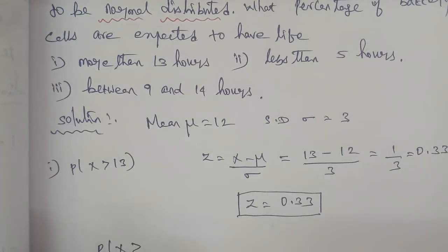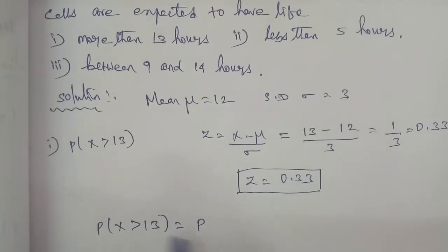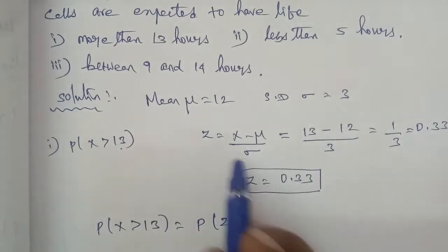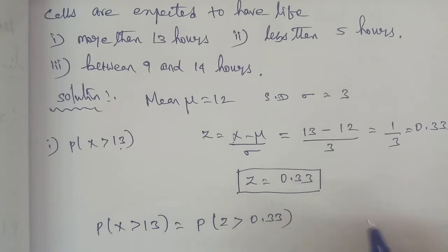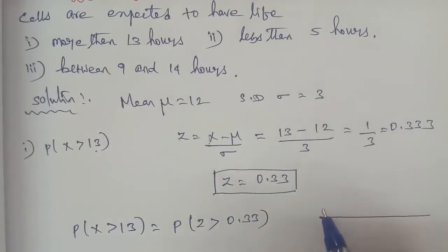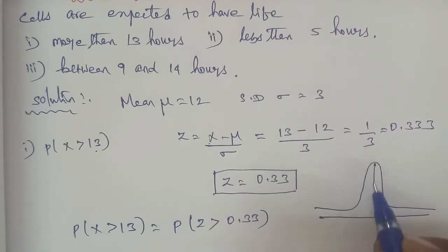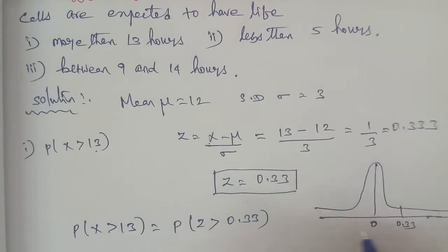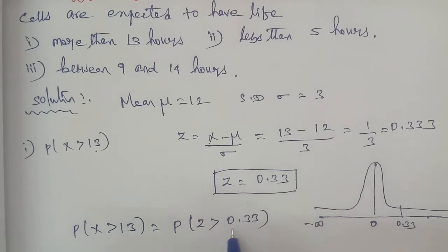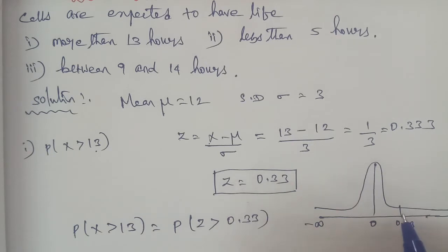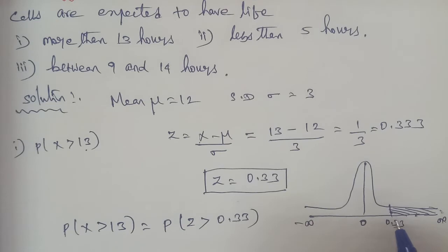P(X > 13) corresponds to Z > 0.33. Since 0.33 is positive, we use the normal distribution curve. The distribution from 0.33 to infinity equals the area from 0 to infinity minus the area from 0 to 0.33. The area from 0 to infinity is 0.5.